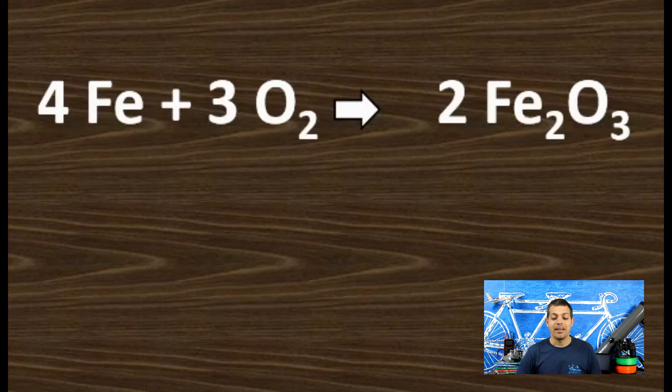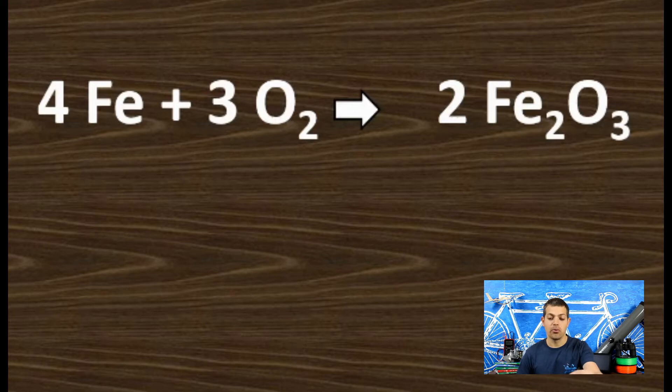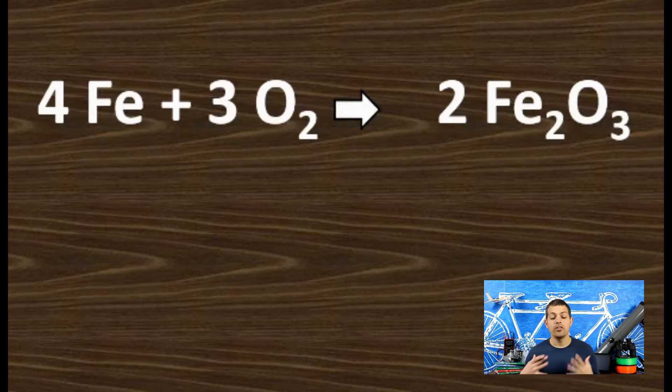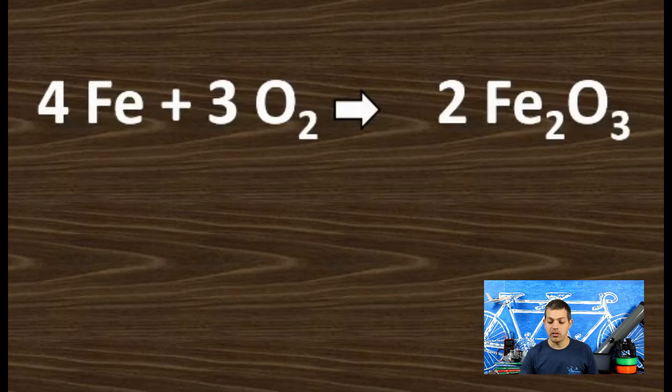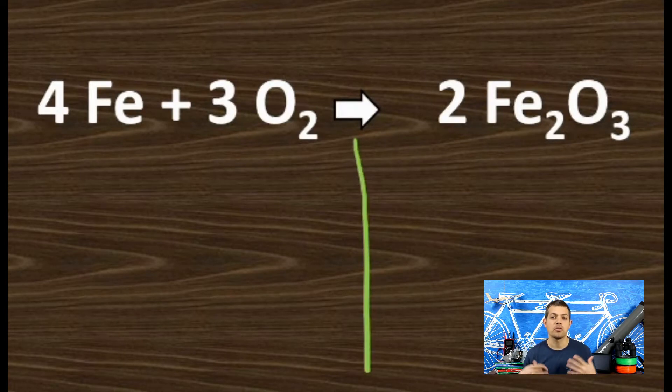The first problem we're going to take a look at is 4Fe + 3O2 yields 2Fe2O3. The first thing I like to do when setting up the equation is to find the arrow. I draw a line straight down from there to split up the equation into two. This helps me visually. It also helps me when I'm actually putting the symbols underneath.